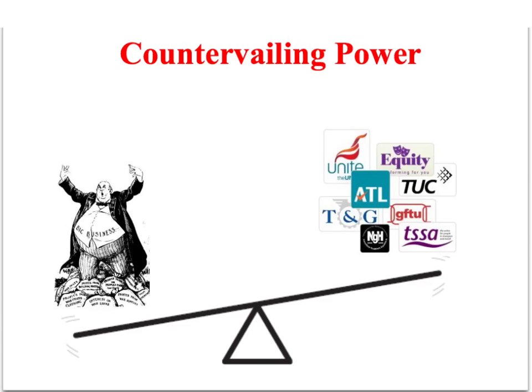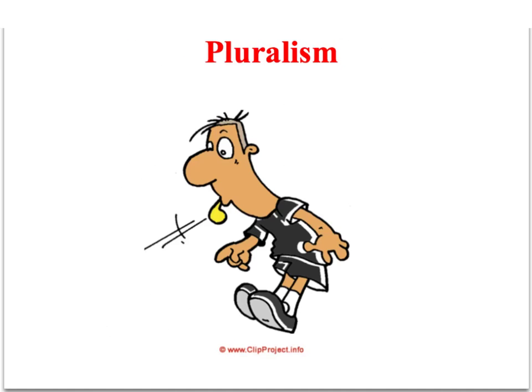Pluralists believe there is an equilibrium in group activity based on the idea of countervailing power. Yes, some pressure groups represent big business such as the CBI, but their power and influence is balanced out by pressure groups representing other sections of society such as the trade union movement. According to pluralism, numerous pressure groups compete for influence, but the government acts as a kind of umpire — an honest broker — tending to make decisions that represent a broad range of interests rather than consistently favouring one type of pressure group.